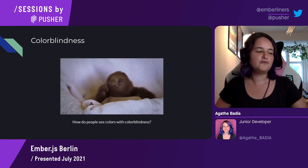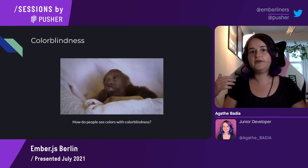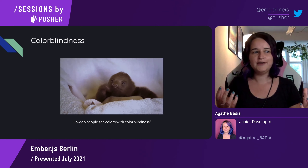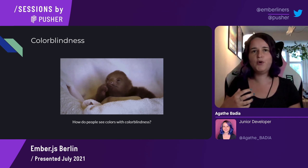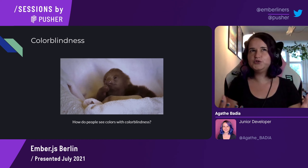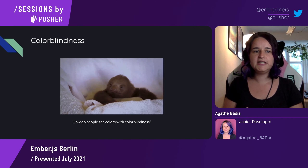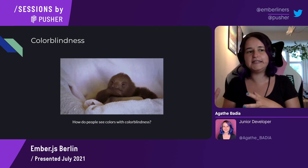My first question was how do people who have colorblindness see colors? How do they go online? How is their experience when they buy something or when they're on a platform? I didn't have a lot of complete answers. I was checking some associations, articles, and reports, but I wasn't fully satisfied, so I wanted to dig deeper and see further than just emulations of pictures of how people see colors.